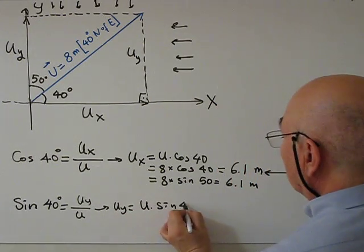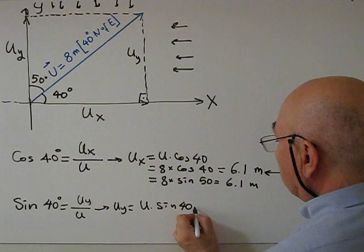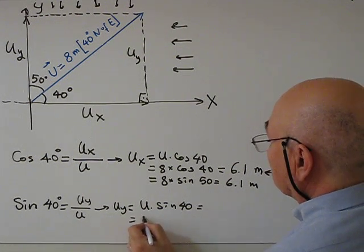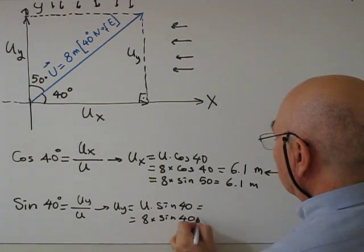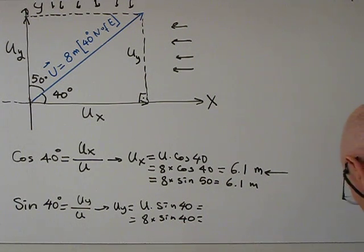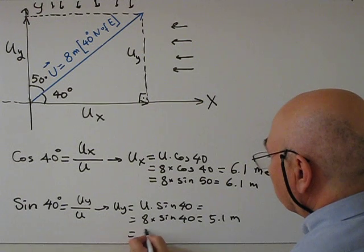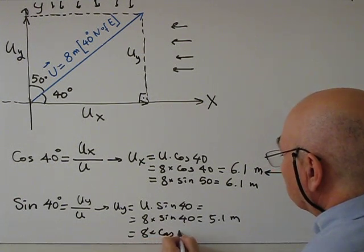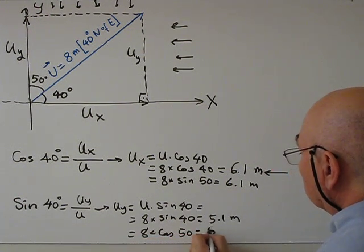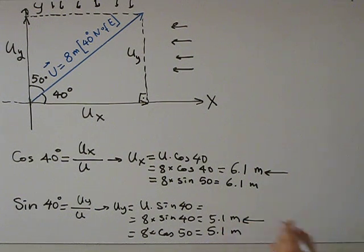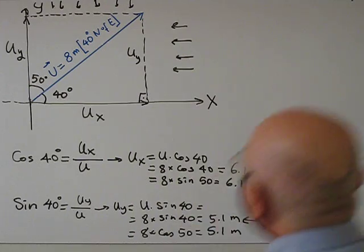So basically this is 8 times sine 40, so we get this 5.1 meters. Or again we can use cosine 50, we get the same. Again I like this method, to be more systematic it is better.